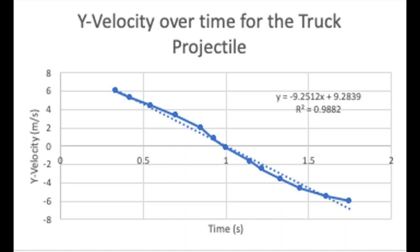Therefore, we determine the slope of the velocity graph to determine the acceleration. The acceleration was found to be negative 9.2 meters per second squared, only 6% error compared to the expected value.